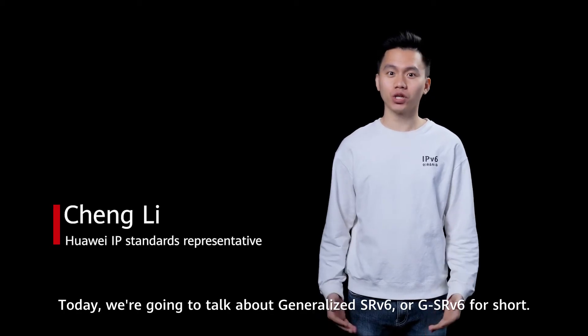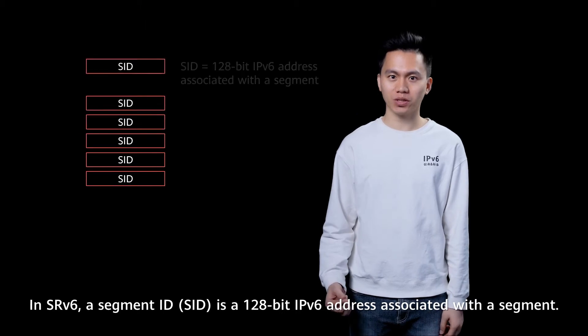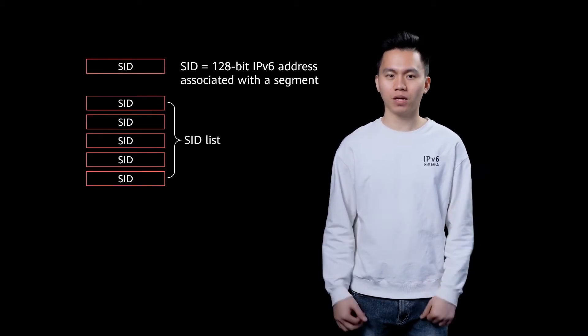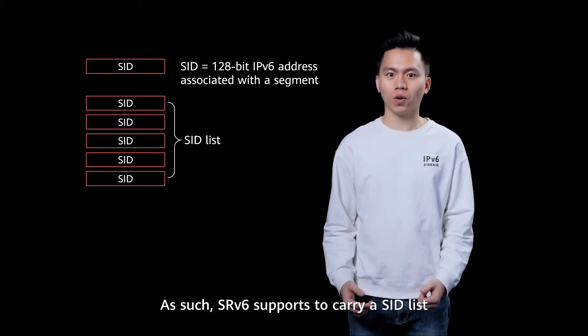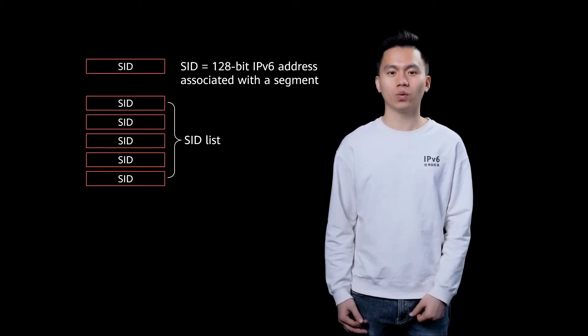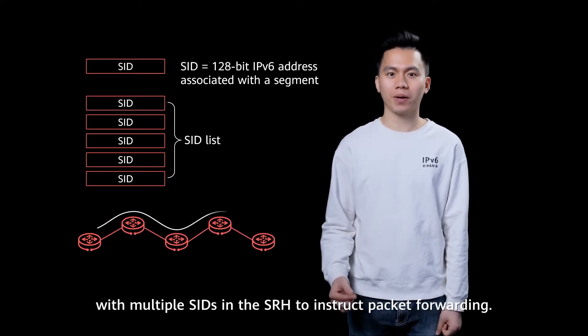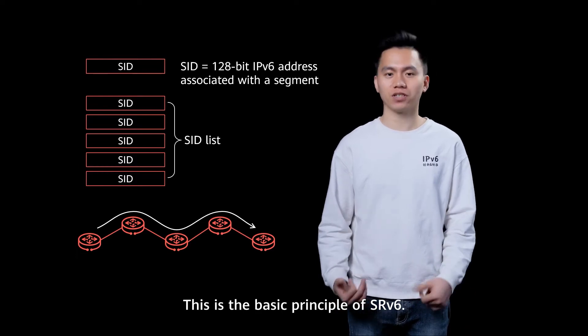Hi guys, today we are going to talk about Generalized SRV6, or GSRV6 for short. In SRV6, a segment ID is a 128-bit IPv6 address associated with the segment. As such, SRV6 supports carrying a segment list with multiple segments in the SRH to instruct packet forwarding. This is the basic principle of SRV6.